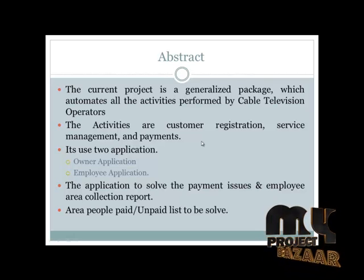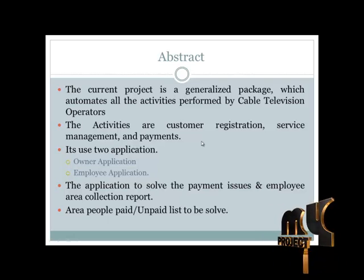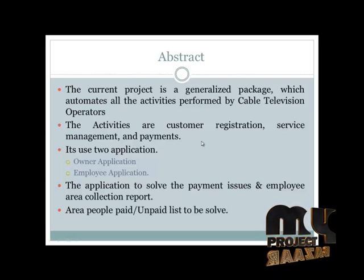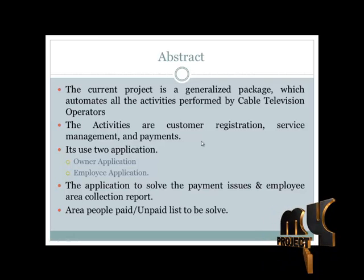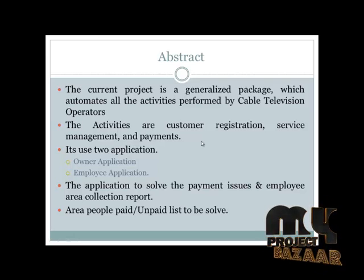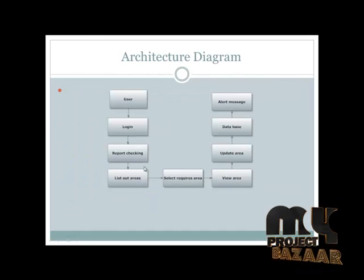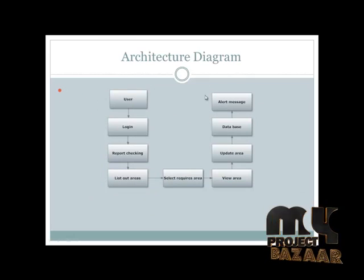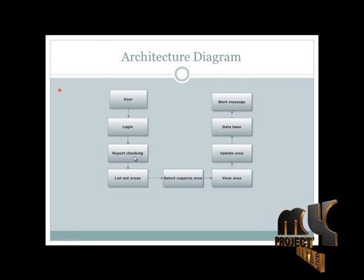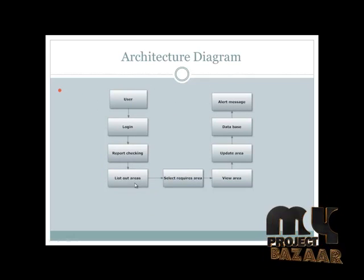This area will provide an entire list to solve problems for each date, and the owner application helps to copy that. This is the flow diagram. It shows the user login and the owner side with alert messages, reporting, checking, and the list of areas.